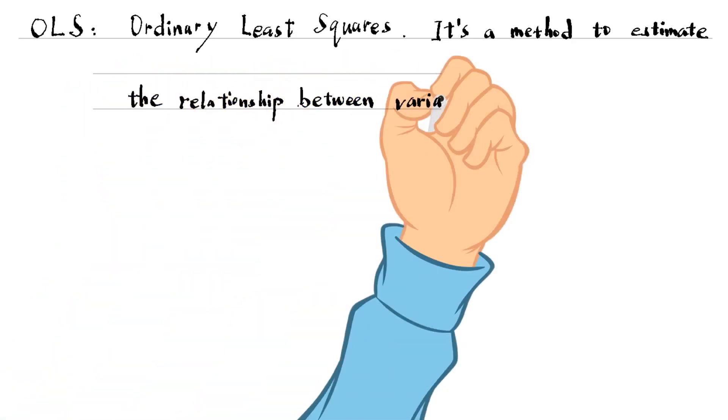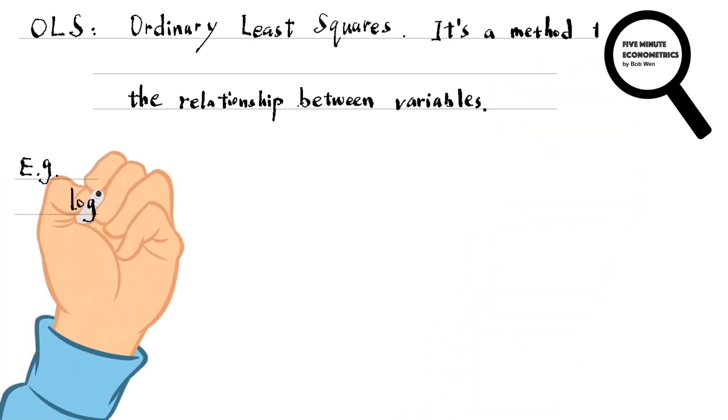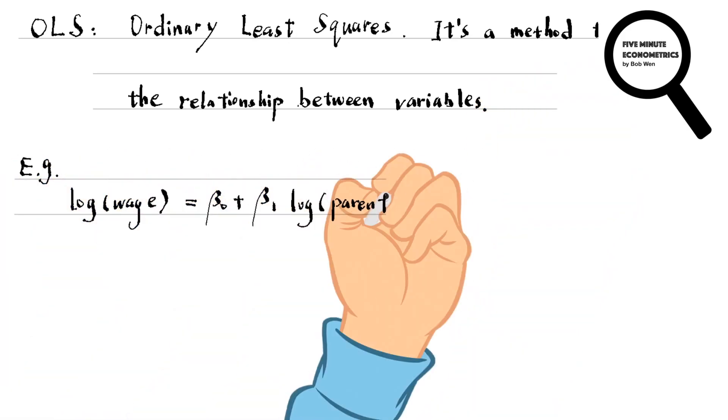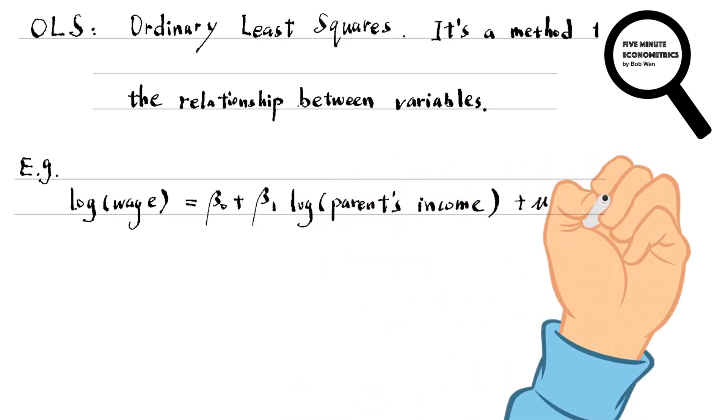Suppose we observe the worker's hourly wage in 2017 and their parents' average income during childhood. We may wonder whether the worker's hourly wage relates to their parents' income.